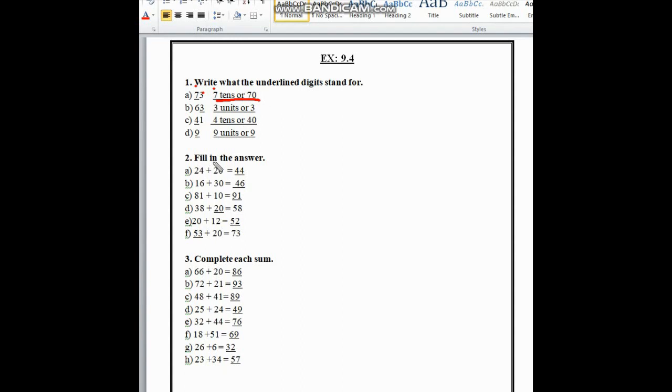In number 2, fill in the answer. First one is 24 and 20. To find the answer we add 24 with 20. In the ones place is 4 and 0. If we add 4 with 0 we get 4. In the tens place is 2 and 2. If we add 2 with 2 we get 4, and it becomes 44.